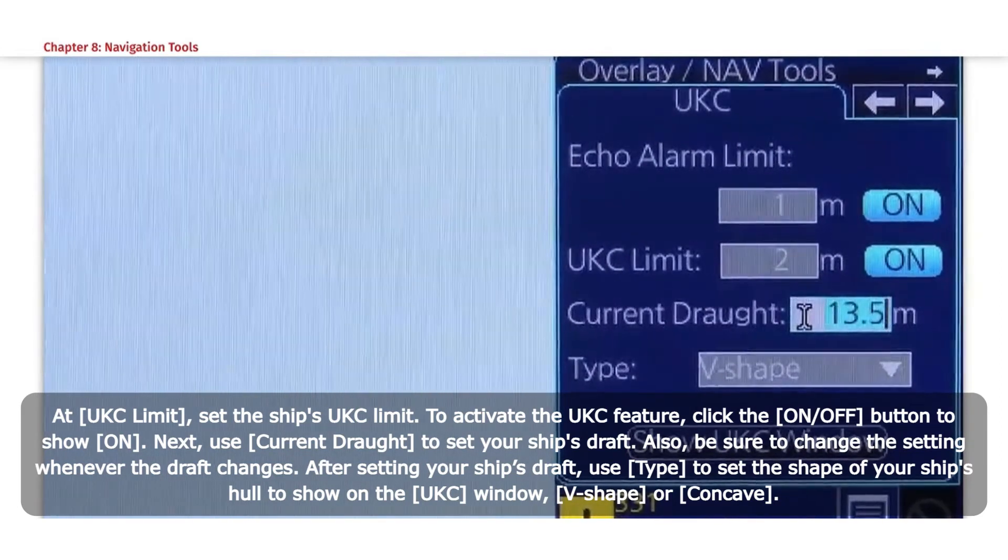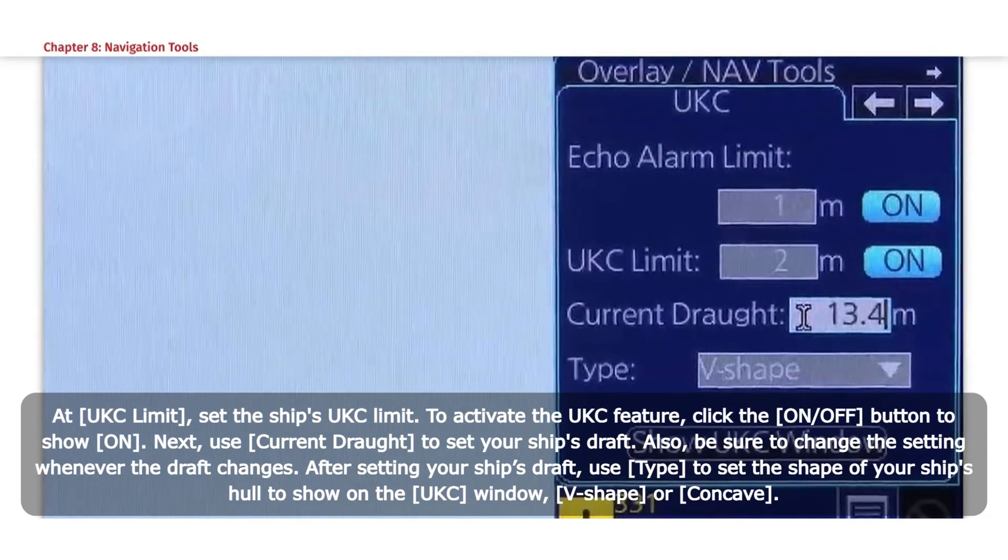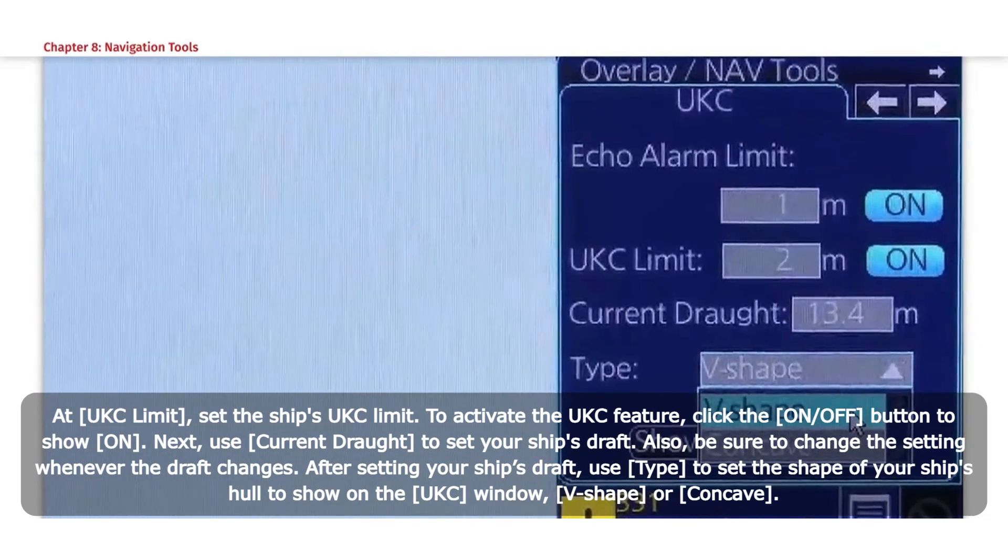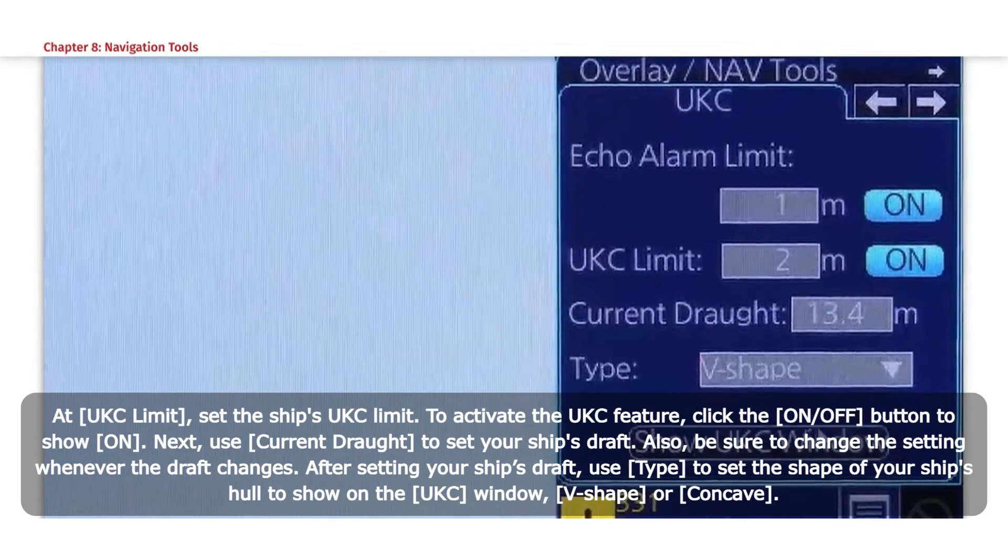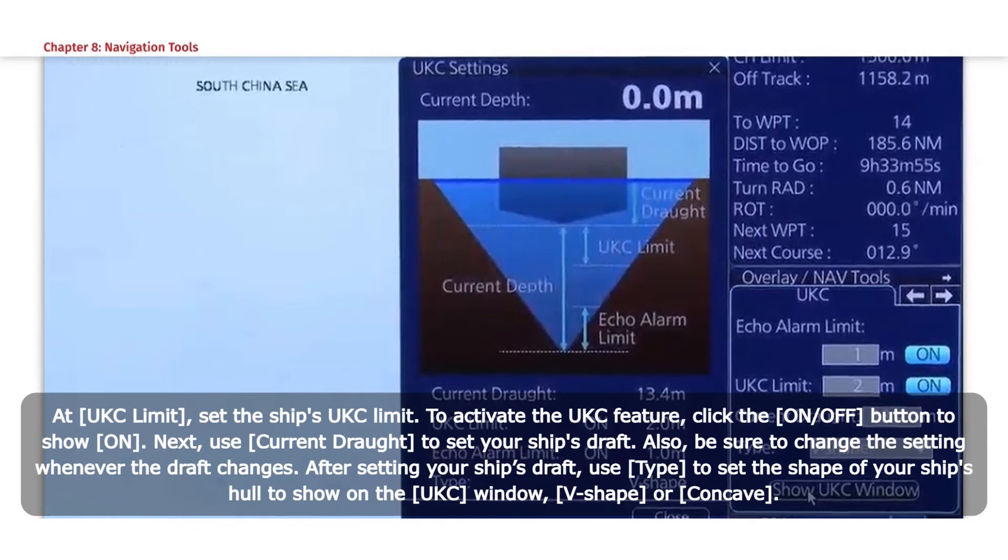Next, use Current Draft to set your ship's draft. Also, be sure to change the setting whenever the draft changes. After setting your ship's draft, use Type to set the shape of your ship's hull to show on the UKC window: V-shape or concave.